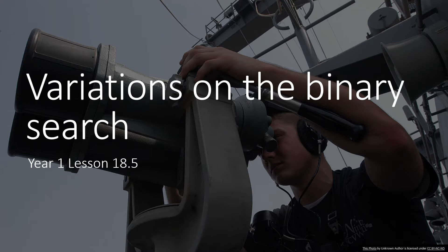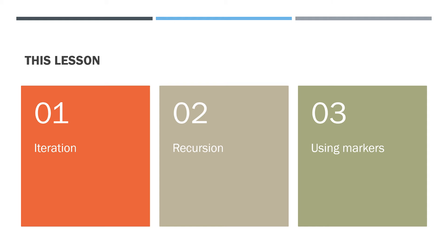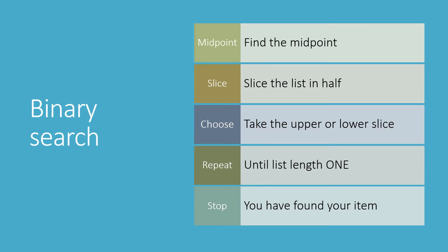Welcome back, this is lesson 18.5. We've been learning about search algorithms, and in this final lesson I'll look at some variations on the way that we write the binary search. We'll look at writing the binary search using iteration, that's the method we've learned already, using recursion, and an alternative method using markers instead of slicing the list.